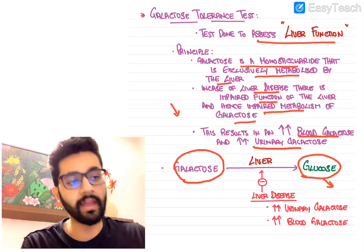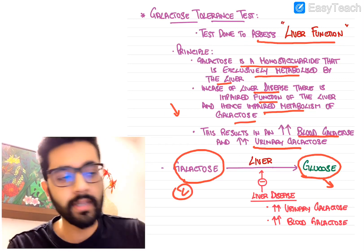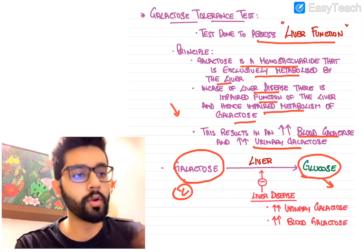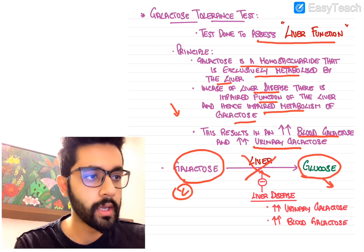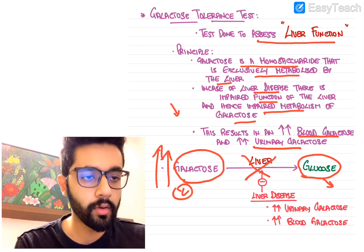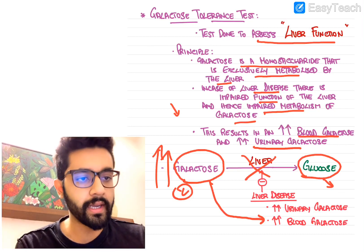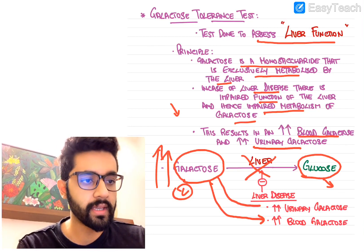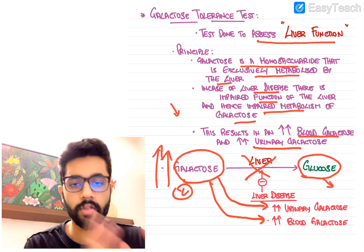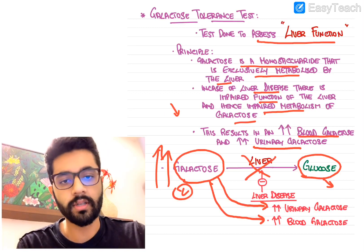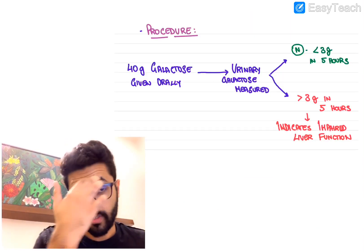Normally the liver converts galactose into glucose, which can then be utilized by cells - nearly every cell in the body can metabolize glucose. But it is only the liver that can convert galactose into utilizable glucose. In liver disease, this conversion stops, galactose increases in the body, and you get increased blood and urinary galactose. Let's look at the procedure.